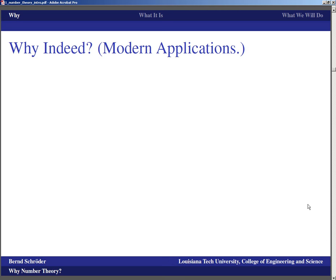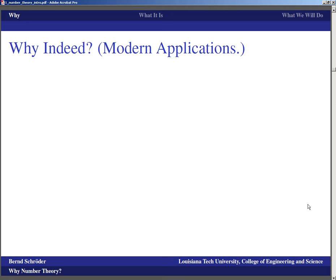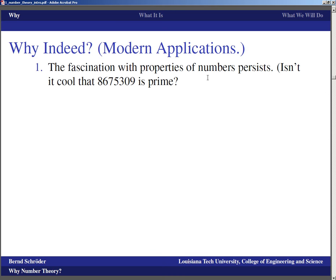If we're looking at why we want to work with number theory from a modern perspective, well, the fascination with properties of numbers persists. People are interested in mathematics, interested in numbers, and simply play with numbers. So for example, isn't it cool that the number 867,539 is a prime number? I mean, you're either fascinated by that or you're not. But then the other question also is, how can we figure this out? How can we prove it?